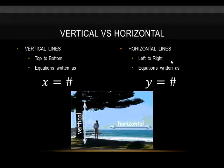Horizontal lines run left to right. The equation is written y equals some number. The y value doesn't change, but x can. Think horizontal, like the horizon—that's where they share the same root. Horizontal lines, like the horizon, are flat. They run left to right.